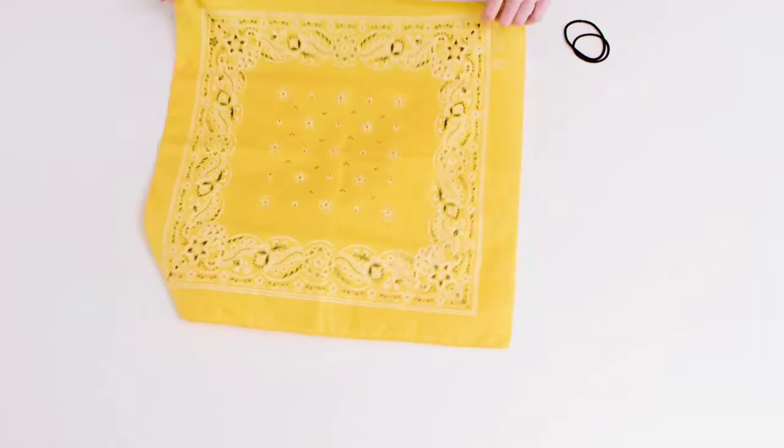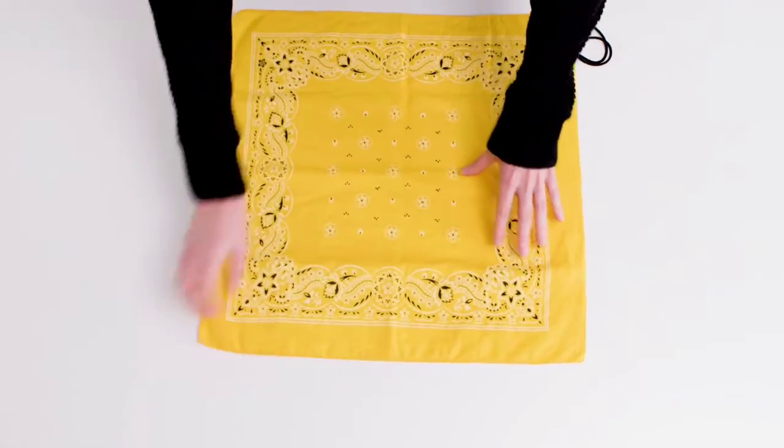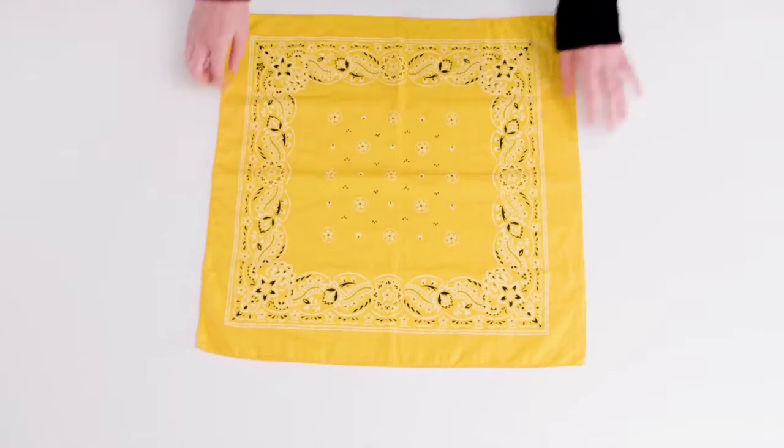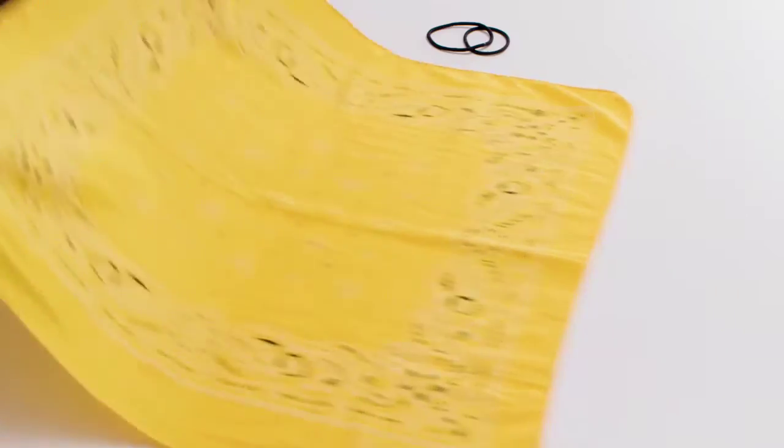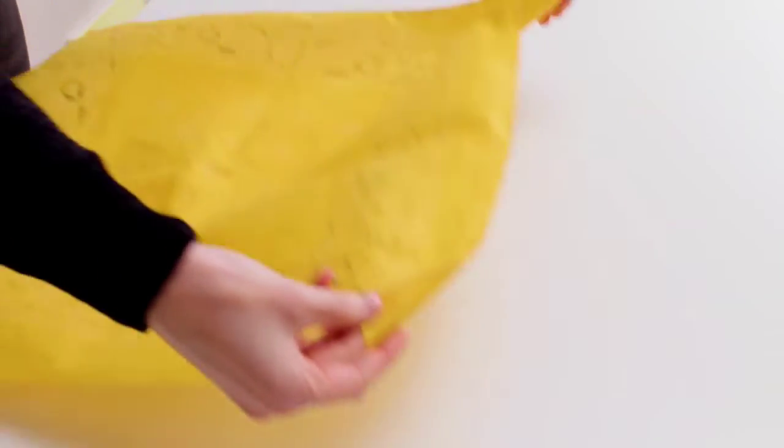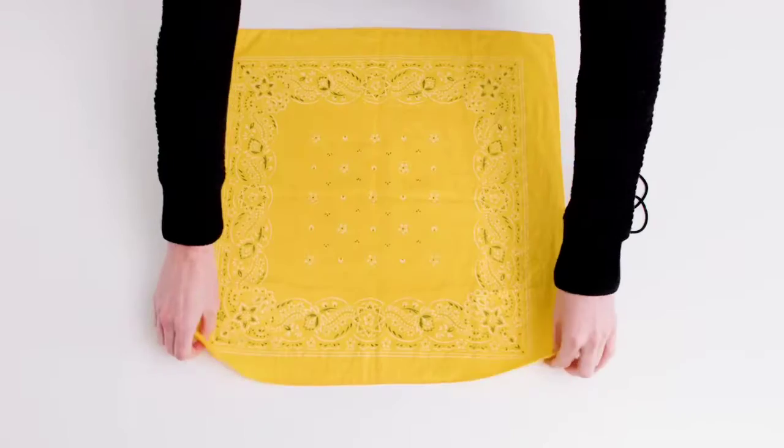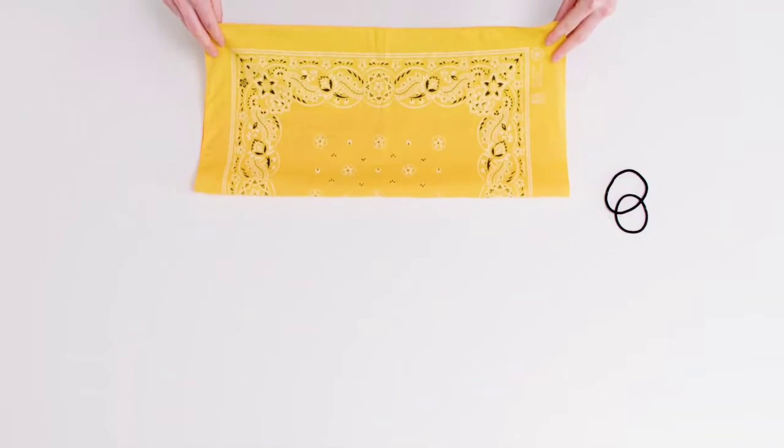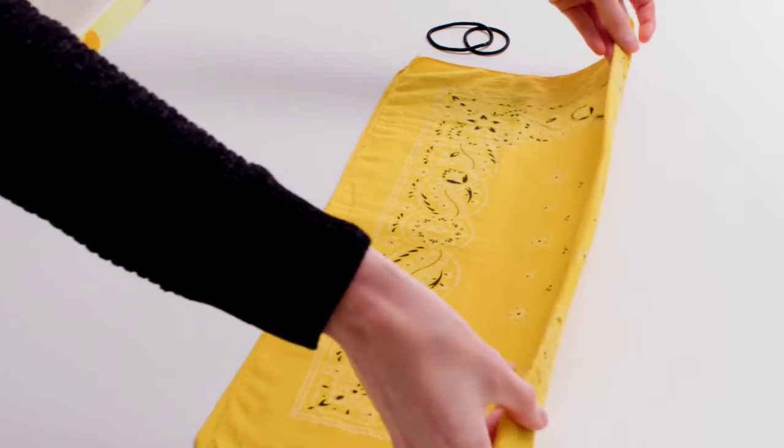So grab a bandana or cloth square that can be washed after each use, two hair ties or rubber bands, and let's make a mask together. Lay the cloth square out flat. Fold it in half, then half again.